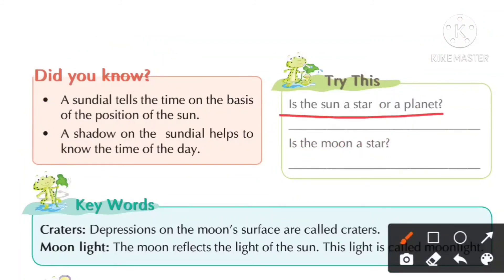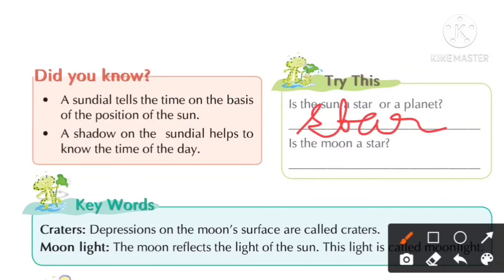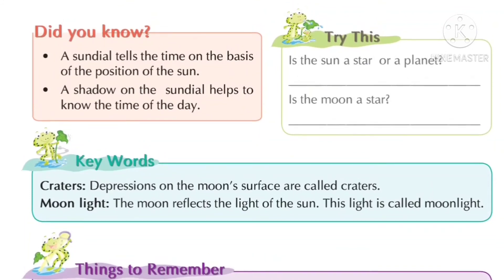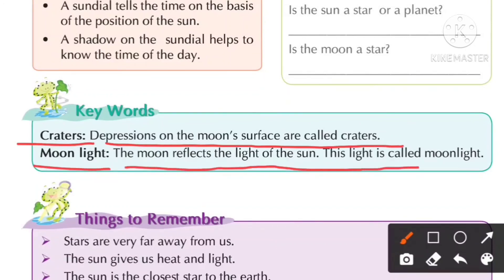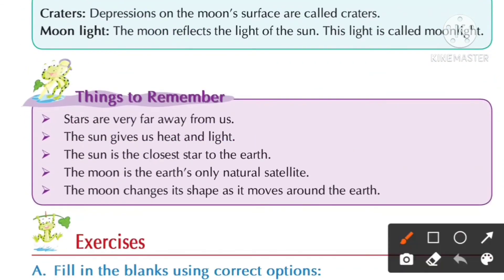The sun is a star, not a planet. The moon is not a star — it is a natural satellite. Depressions on the moon's surface are called craters. The moon reflects the light of the sun, and this light is called moonlight. Things to remember: stars are very far away from us; the sun gives us heat and light; the sun is the closest star to the earth; the moon is the earth's only natural satellite and changes its shape as it moves around the earth.